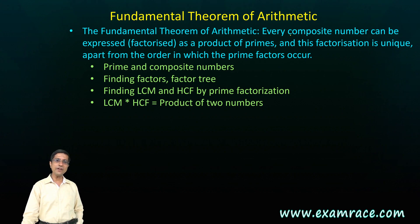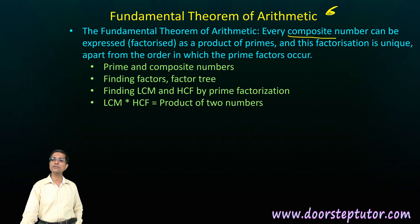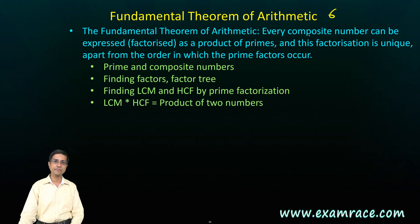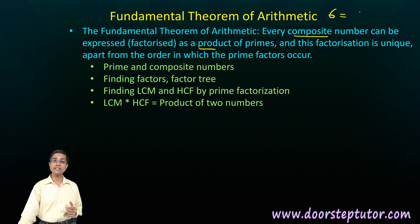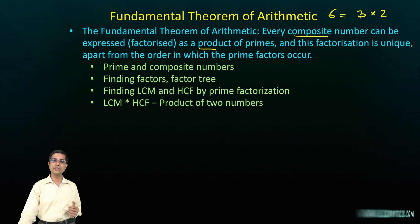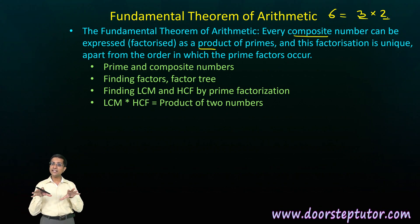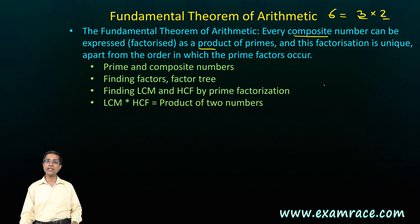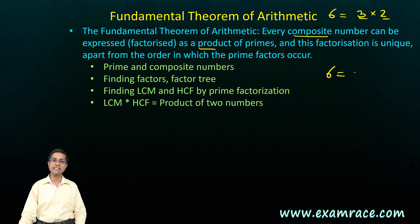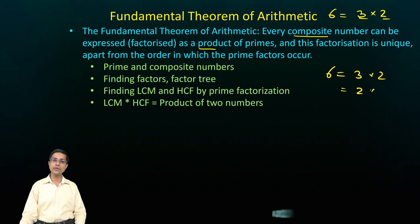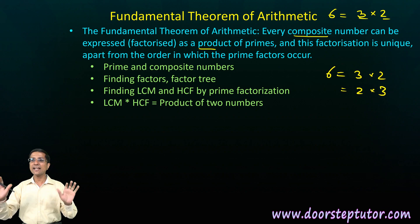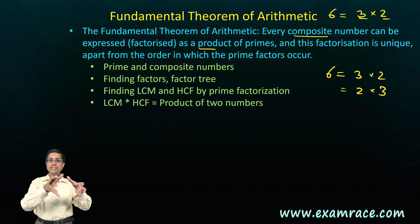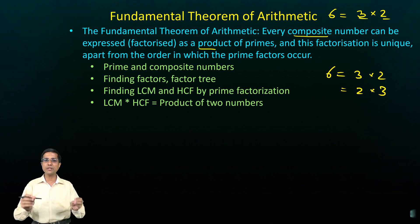To understand the theorem, we say that every composite number can be written as a product of primes. For example, take the number six — six is not a prime number. It can be written as three times two, and three and two are both prime numbers. This factorization is unique. I can change the order and write it as two times three, but it means one and the same thing — the underlying factors are exactly the same.